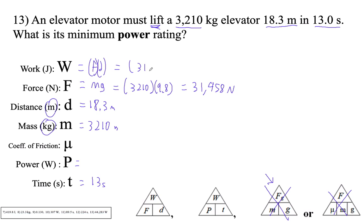So that's going to be our 31,458 newtons times 18.3. So literally, that's on my calculator. I'm going to go times on my calculator. It goes answer times, and then 18.3. Okay, so that's 575,681.4 approximately. Joules of work.